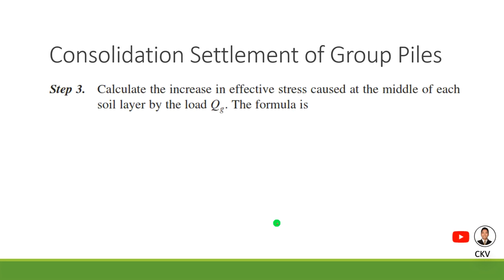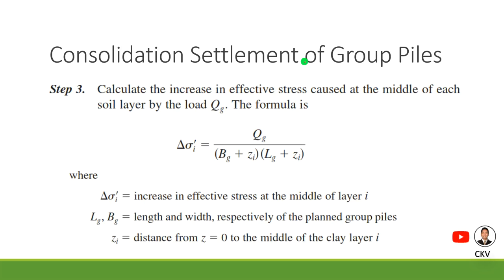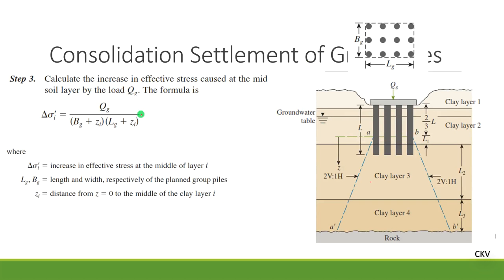Step 3: calculate the increase in effective stress caused at the middle of each soil layer by the load Q_G. The formula for determining that increase in effective stress uses values B_G, L_G, and Z_I. B_G and L_G are the width and length of the plan area of the pile group respectively, and Z_I is the distance from Z=0 (the starting point at 2L/3) to the middle of the clay layer. The increase in stress equals Q_G divided by the equivalent spread area at the mid-height of the clay layer.